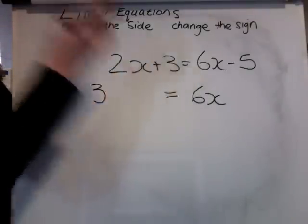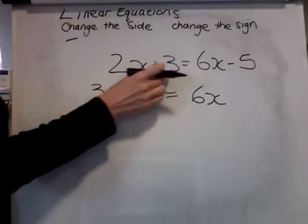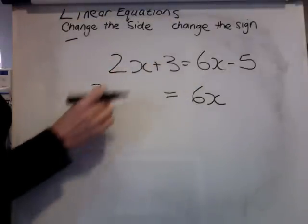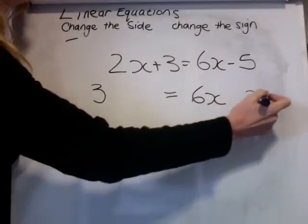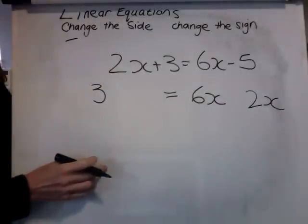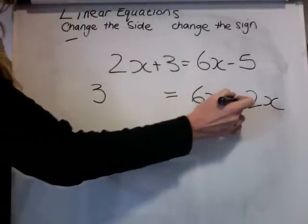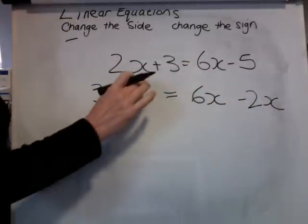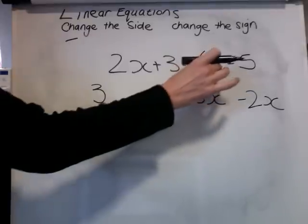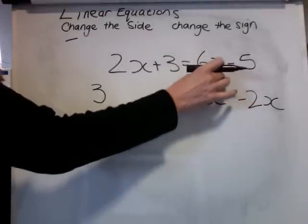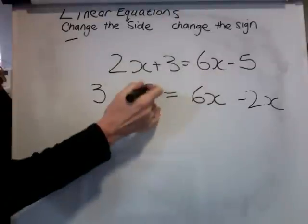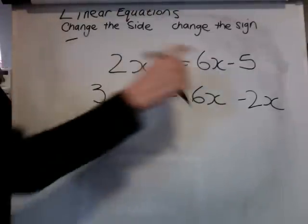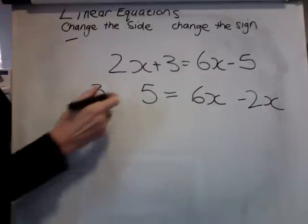Looking at the first bit. 2X plus 3. The 3 stays where it is. I need to move 2X. Change the side. Change the sign. Was plus 2X, now minus 2X. Going over to the other side. 6X stays where it is. The 5 needs to come over to the numbers. Change the side. Change the sign.